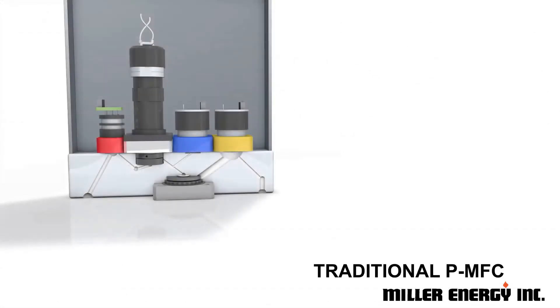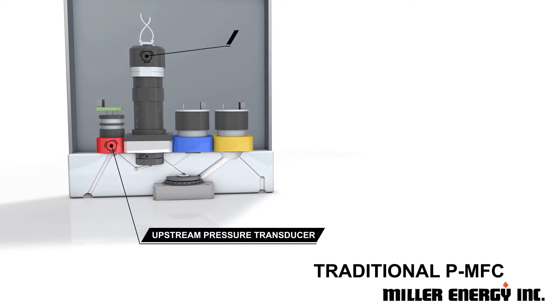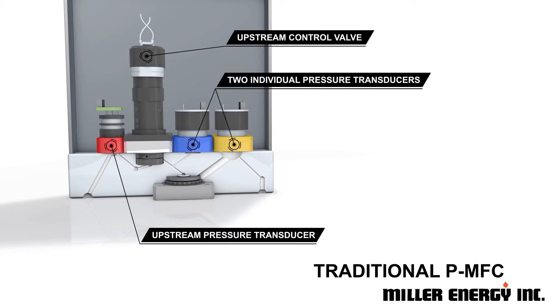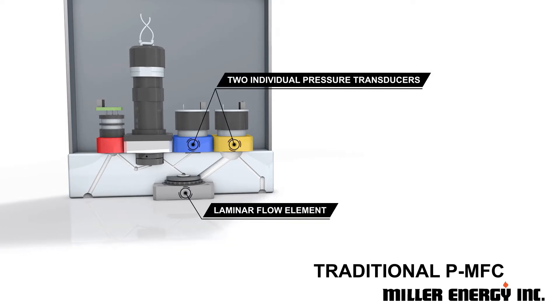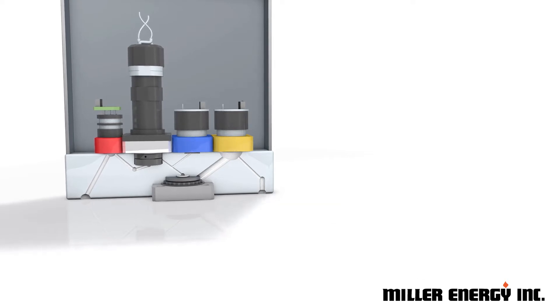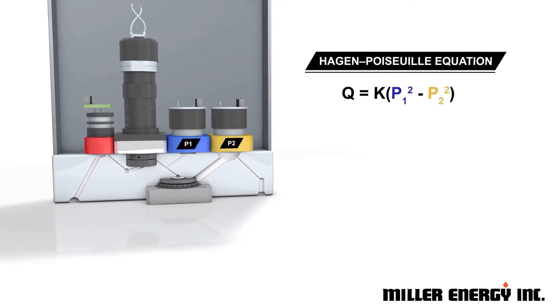A traditional PMFC approach includes an upstream pressure transducer to measure the supplied pressure, an upstream control valve, two individual absolute pressure transducers and a laminar flow element. The two individual absolute pressure transducers and the laminar flow element work together to measure the pressure drop. This information is then used to derive the mass flow rate.